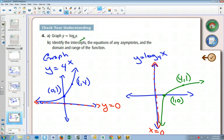So for a log graph, it will only have an x-intercept. And that x-intercept will always be at 1. The asymptote will always be x equals 0.